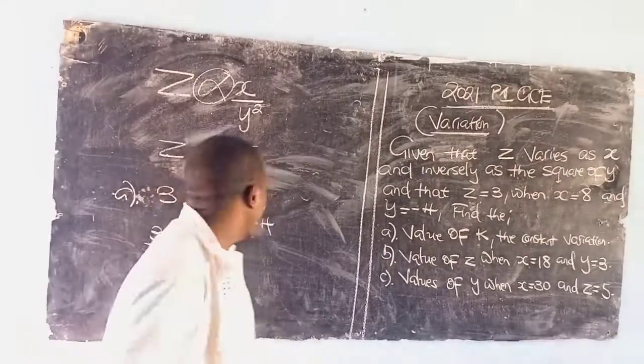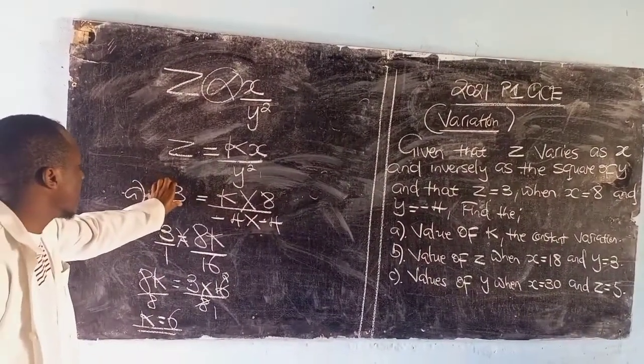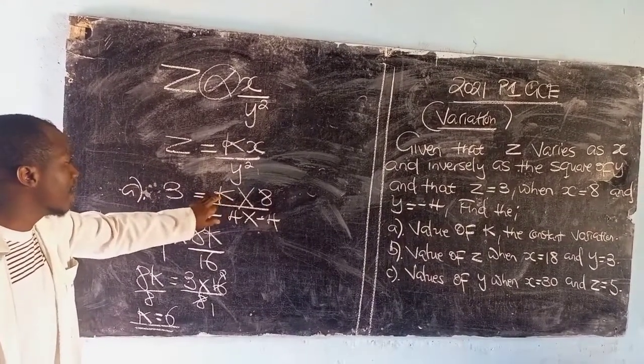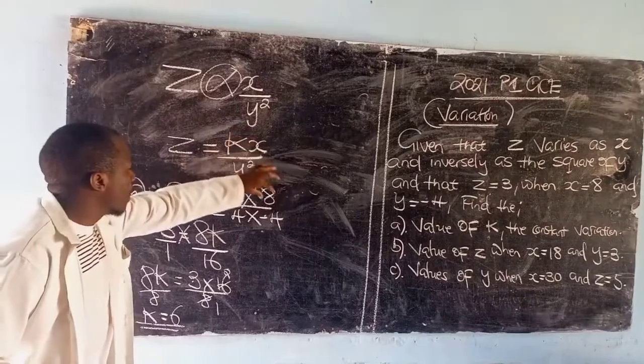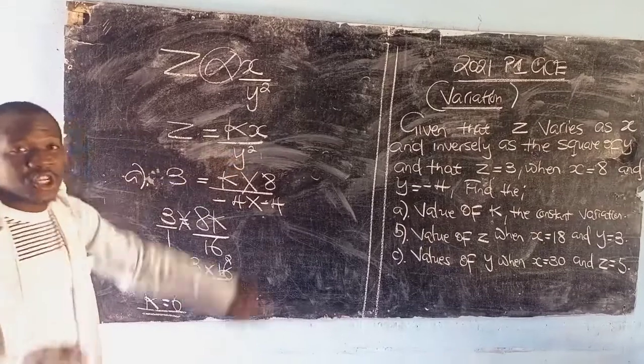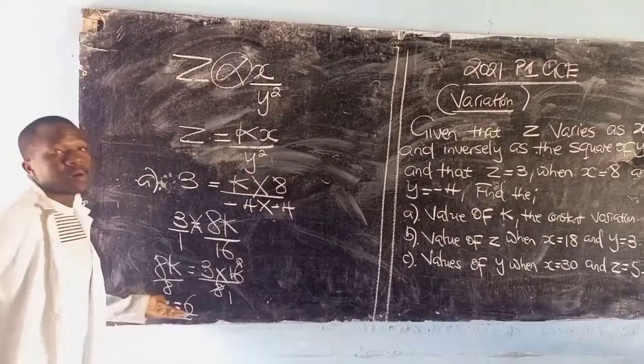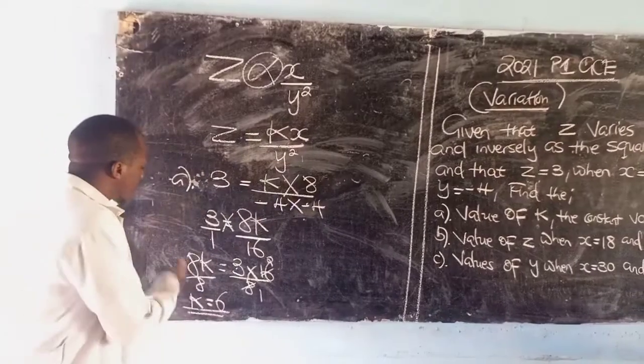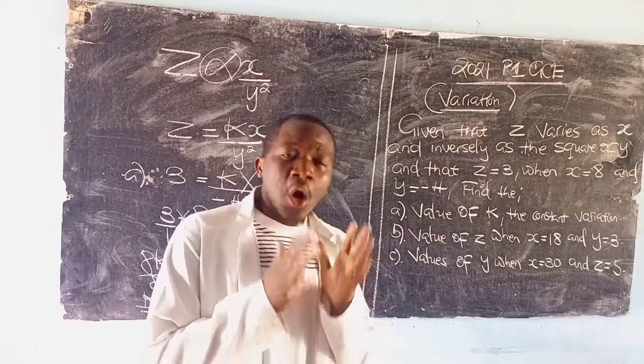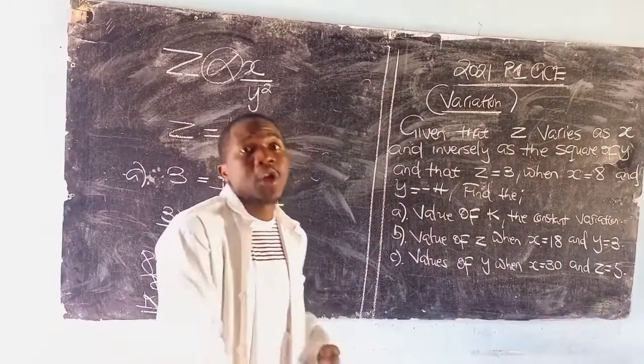So the value of k is 6. The first important thing: z was 3, the value of k was not given because it's a constant variation, whereas x was 8 and y is negative 4. Whatever we replace where y is should be replaced twice. So that means k equals 6. Make sure that the value of k is solved correctly because it is the decider of how wrong or correct the rest of the questions are going to be.